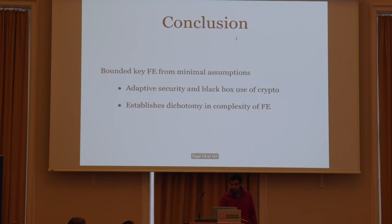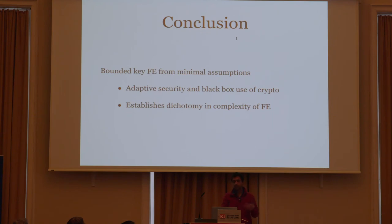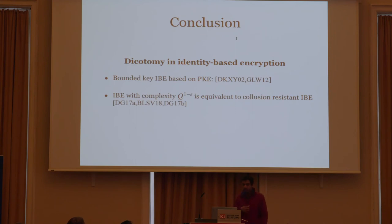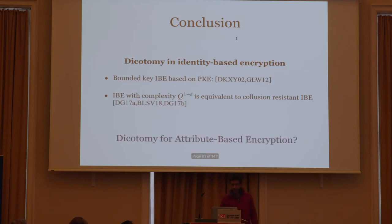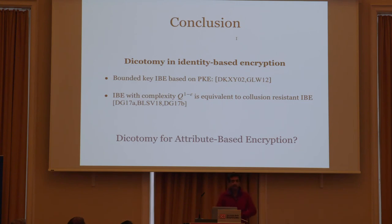In conclusion, we show how to construct bounded key FE schemes from minimal assumptions. We get adaptive security and make black-box use of cryptography. This establishes a dichotomy in the complexity of FE schemes. Previously, a dichotomy was established for identity-based encryption. A natural question is whether there is a dichotomy for attribute-based encryption — ABE lies between IBE and FE, but there doesn't seem to be any dichotomy for ABE, which is surprising.